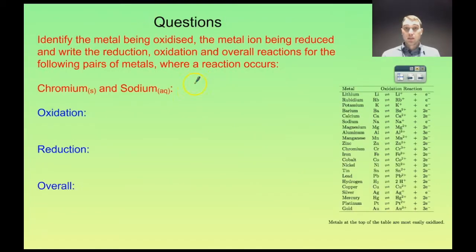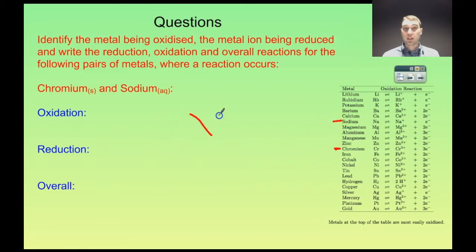So in this question we've got solid chromium going into a solution of sodium ions. Let's find where they are: here's chromium and here's sodium. Again, we have a solid metal that is less active than the ions of the metal in the solution it's going into. So what's going to happen? Nothing. Sodium oxidizes really easily — it's oxidizing to its ions very easily — and that means it's very hard to push it back the other way. The chromium oxidizing is not going to be able to force the sodium ions to reduce back to solid sodium. You'd need to put in an awful lot of energy to get that to happen.